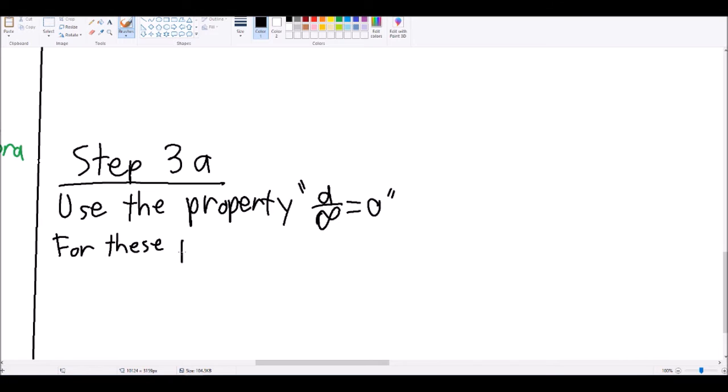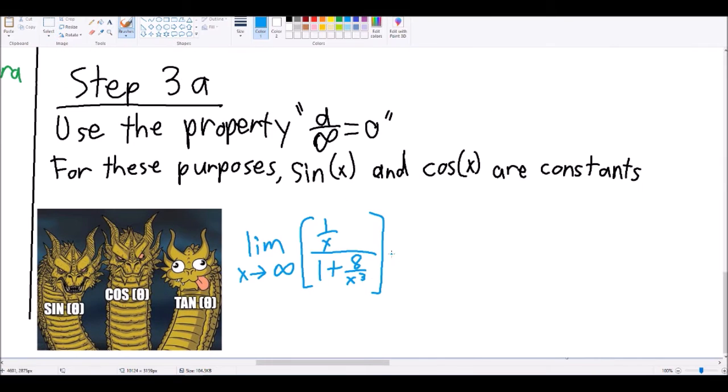Now, for these purposes, you can think of sine of x or cosine of x as constants. After all, they only go to 1 and negative 1. Just don't try that with tangent of x.